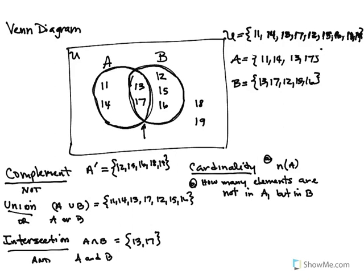Cardinality basically represents the number of elements that are present in a set. The notation for cardinality is the small n, so n(A) means the number of elements in set A. You can use the Venn diagram or the list — either way you count one, two, three, four — you get four elements in A.